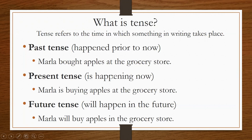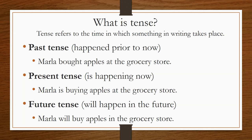Present tense refers to things happening now. The '-ing' ending is a good signifier for present tense. For example: 'Marla is buying apples at the grocery store' — she is in the process of buying them right now. Future tense refers to things that will happen in the future, whether in five minutes or five decades. For example: 'Marla will buy apples at the grocery store.'